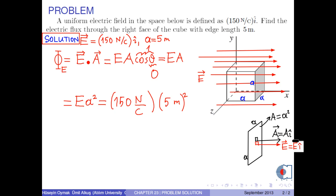As a result, the electric flux through the right face of the cube is obtained as 3750 Nm squared per C.